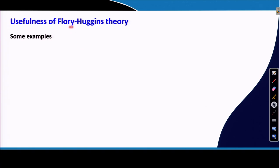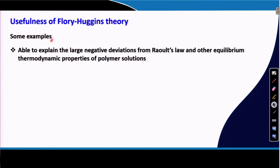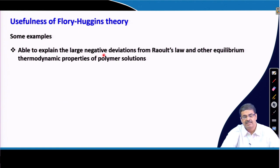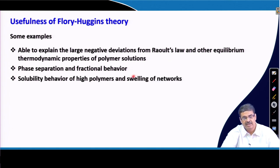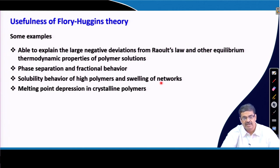We derived Flory-Huggins theory in the last lecture. Some of the usefulness of Flory-Huggins theory are mentioned here. For example, we will be able to explain large negative deviations from Raoult's law and other equilibrium thermodynamic properties of polymer solutions using Flory-Huggins theory. We can also explain phase separation and fractionation behavior of polymer solutions, and solubility behavior of high polymers and swelling of polymer networks in different solvents.